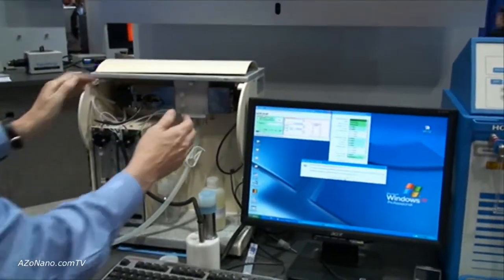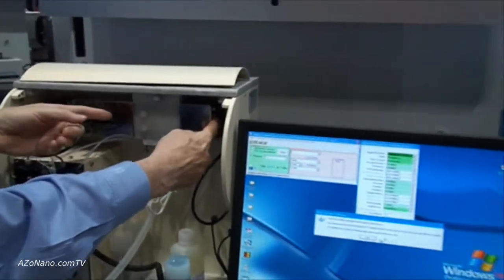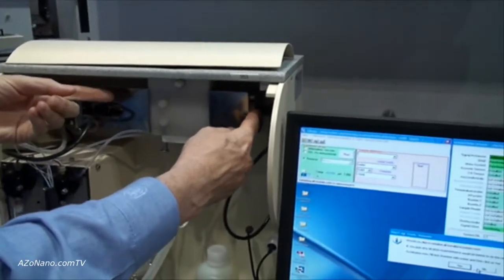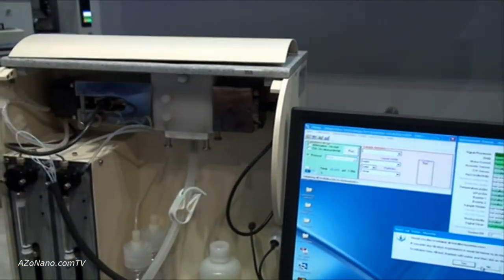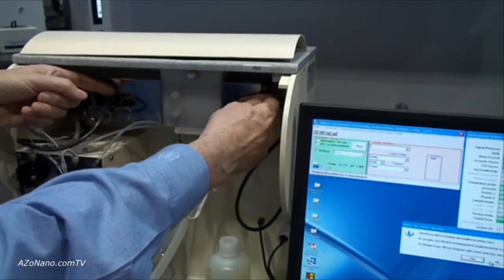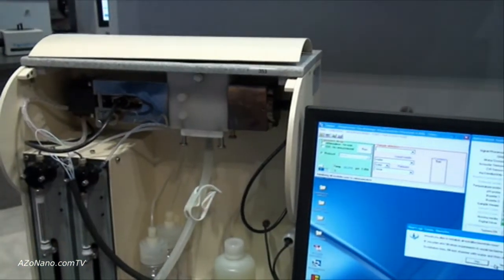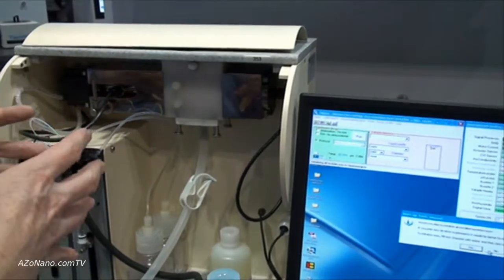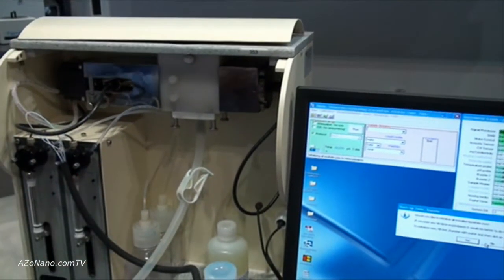It sits in this chamber and what we're going to do now is we have an acoustic source on the right and a detector on the left and we're going to measure acoustic attenuation which is the loss of energy as a function of distance between the transmitter and receiver and also as a function of frequency. We take that information and from there we can calculate the particle size distribution.